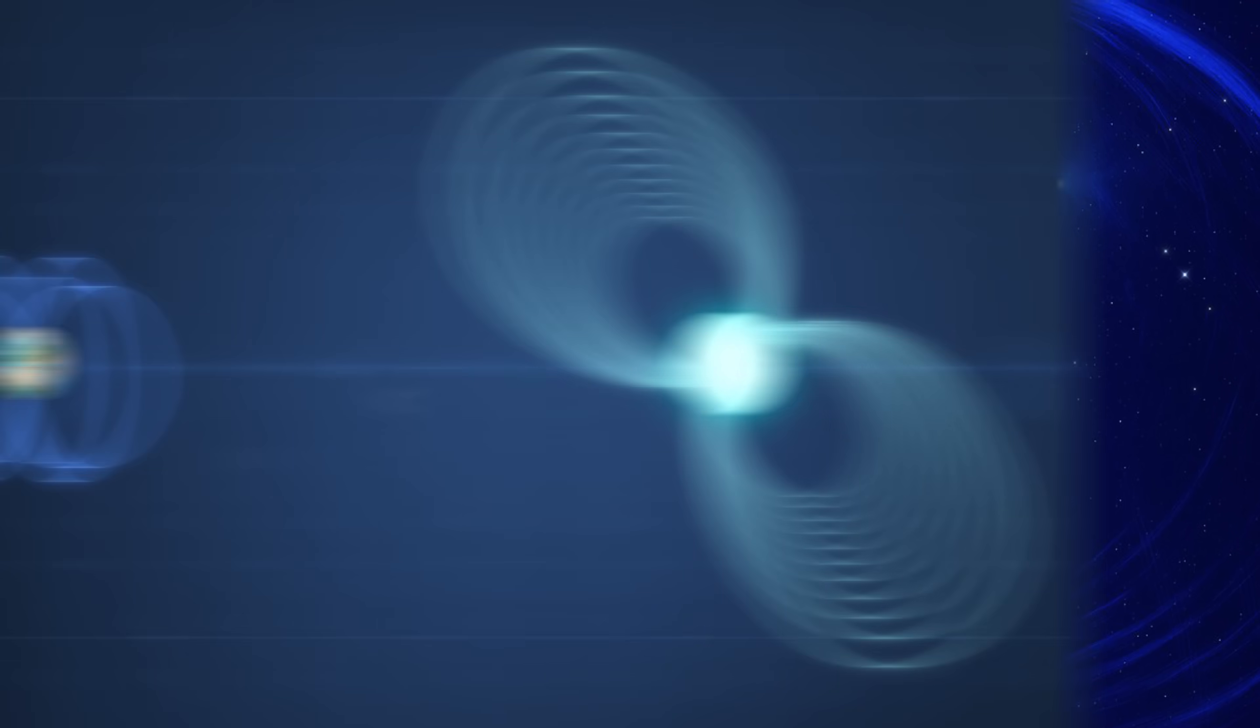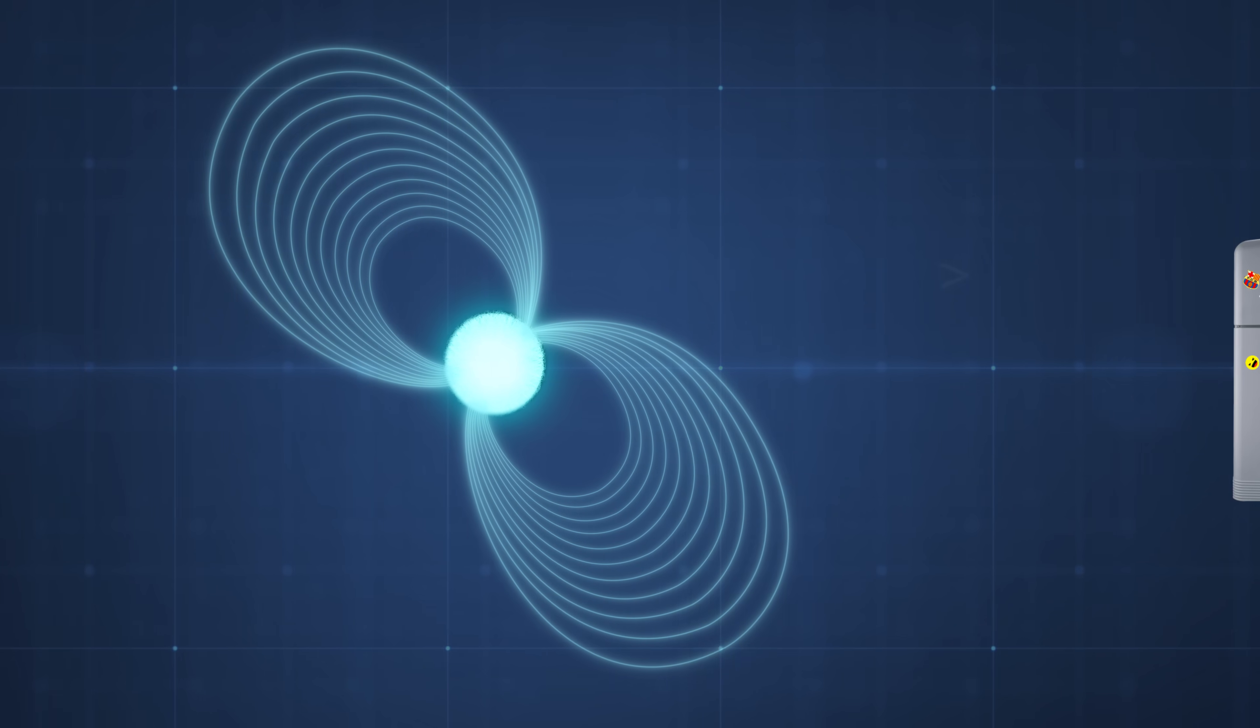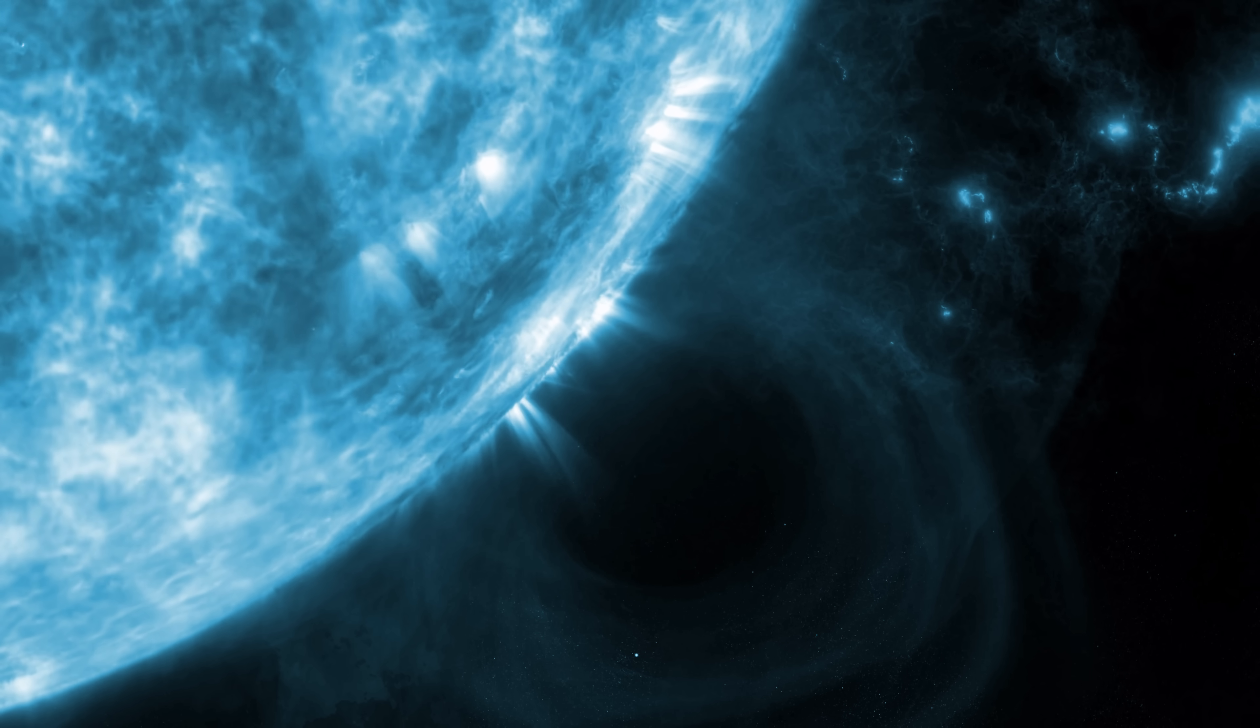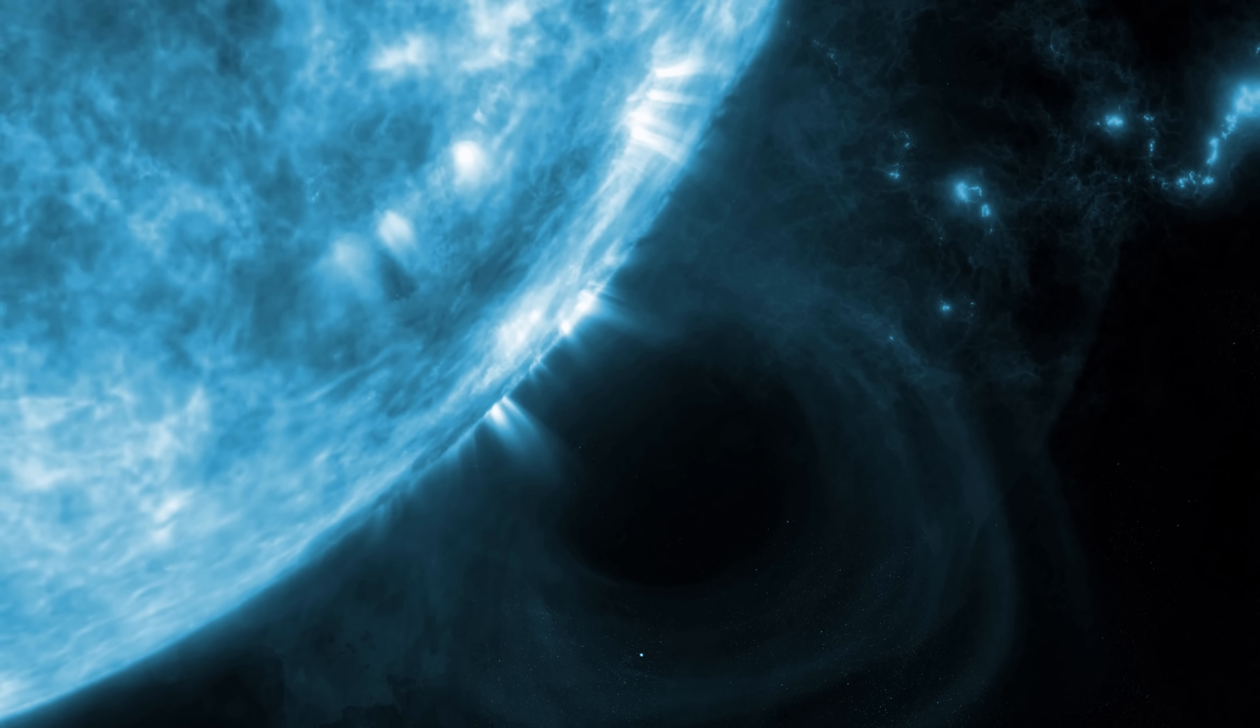To understand the magnitude of a magnetar's magnetic field, consider this. It is about two quadrillion times stronger than Earth's magnetic field, and 20 trillion times more powerful than a refrigerator magnet. These are magnetic fields so strong they can erase data from a credit card halfway to the sun.